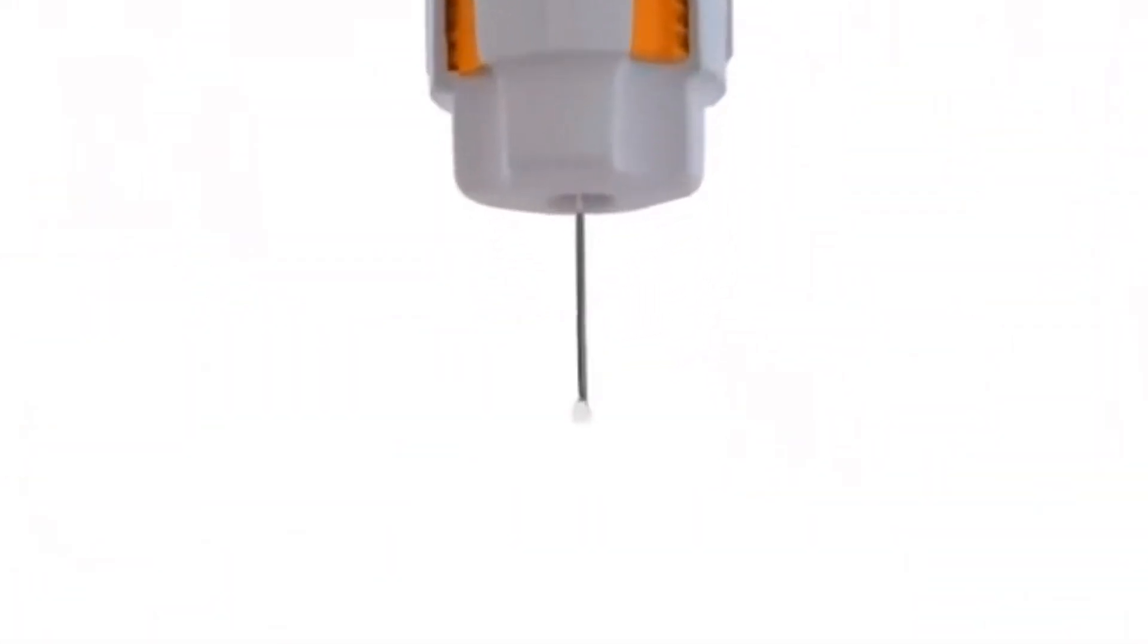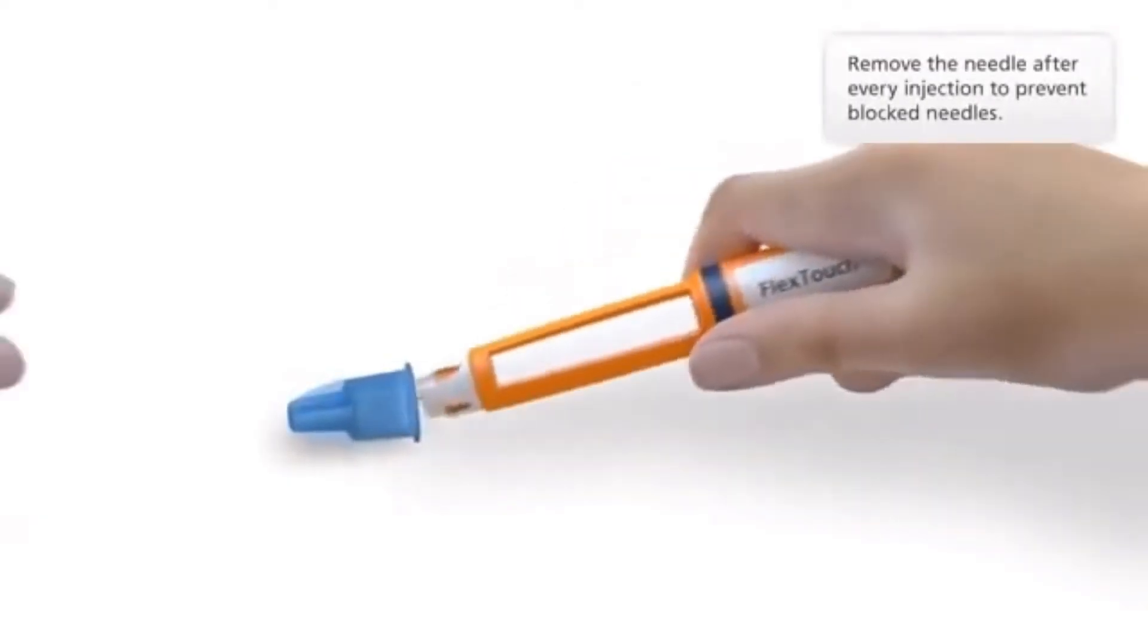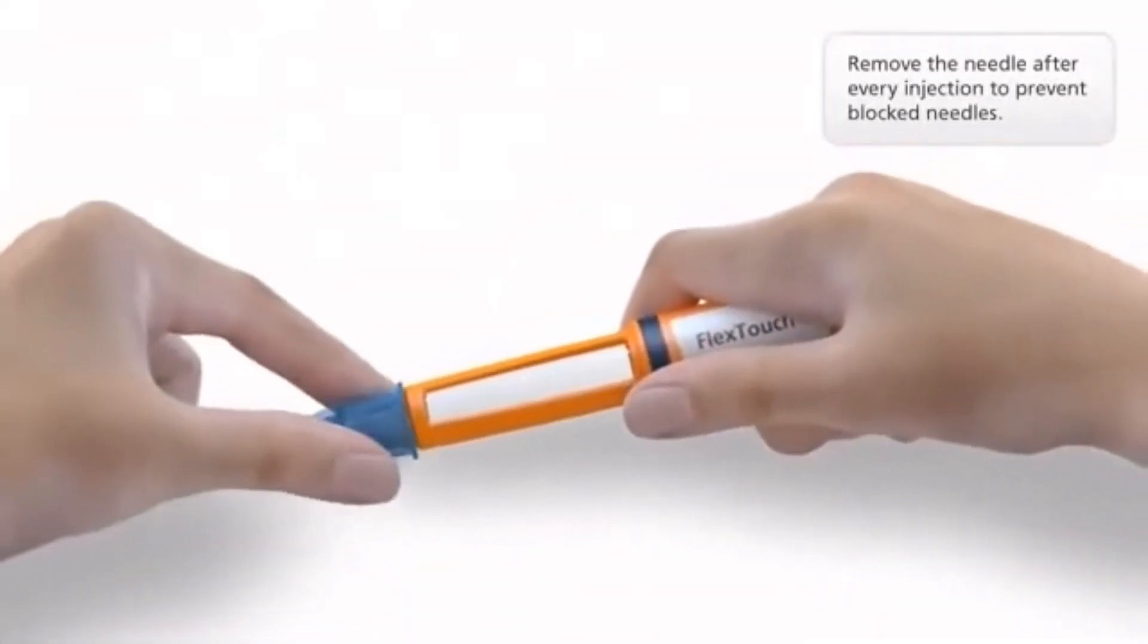When you remove the needle from the skin, a drop of insulin may appear at the needle tip. This is normal and does not affect your dose. Remove the needle after every injection to prevent blocked needles.